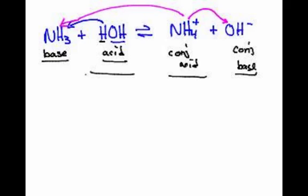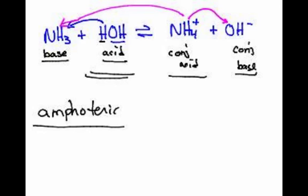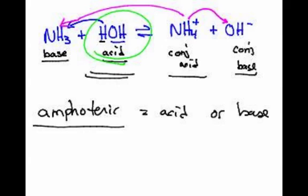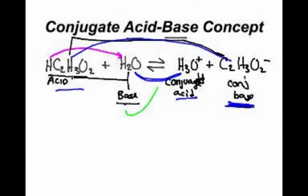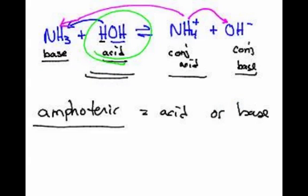Mr. Sams just mentioned a big word here. Let's write it out: Amphoteric or amphoterism. An amphoteric substance is a substance that can either be an acid or a base. As you see in this slide, water is actually acting as an acid. In the previous slide, water acted as a base. So water is said to be an amphoteric substance.